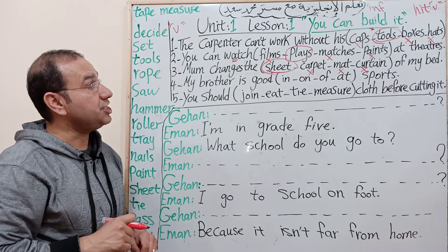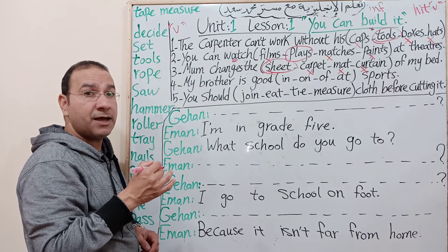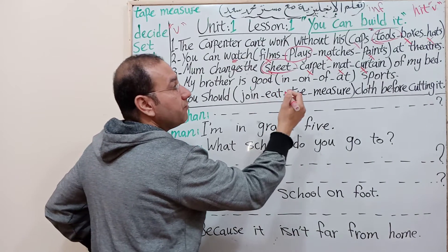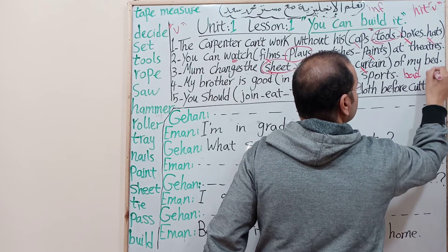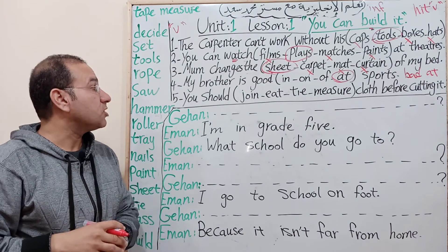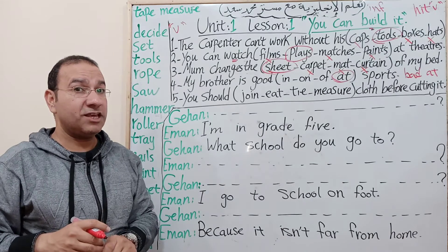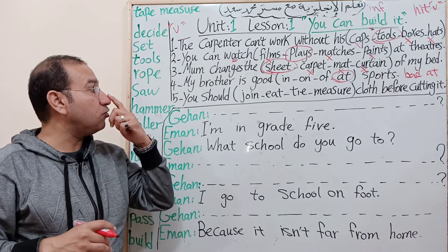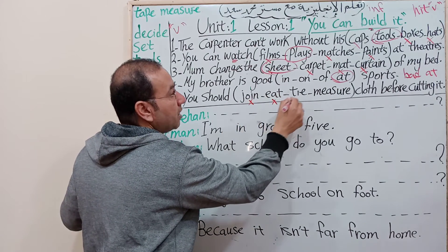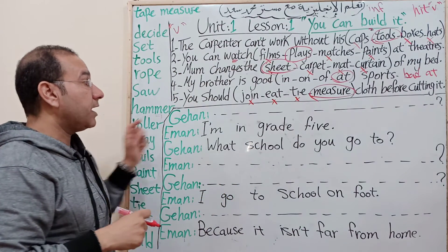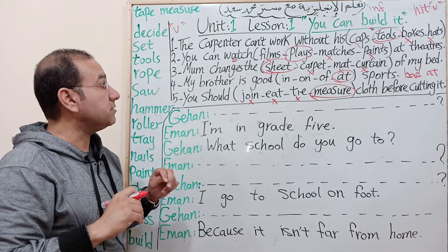The negative: 'Mom doesn't change the sheet of my bed.' Number four: 'My brother is good ___ sports.' Good in? No. Good on? No. Good of? No. Good at - meaning جيد في (good at). The opposite is 'bad at.' Number five: 'You should ___ cloth before cutting it.' Join? No. Eat? No. Tie? No. Measure! You should measure cloth before cutting it. 'Should' means ينبغي (should/ought to) and is used for advice - it's followed by the infinitive.